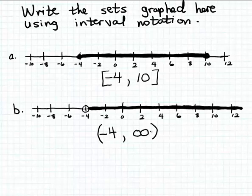Remember, in interval notation, whenever you're going to use the infinity symbol or the negative infinity symbol — which you get by putting a minus sign in front of the sideways 8 — you can never include that in a set because those are not actually real numbers. So you must always use a parenthesis beside either of the two symbols used for infinity.